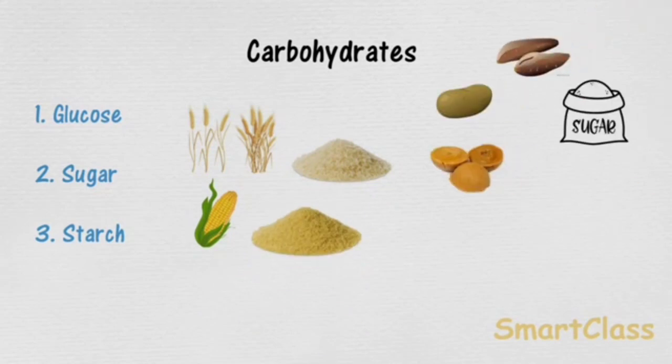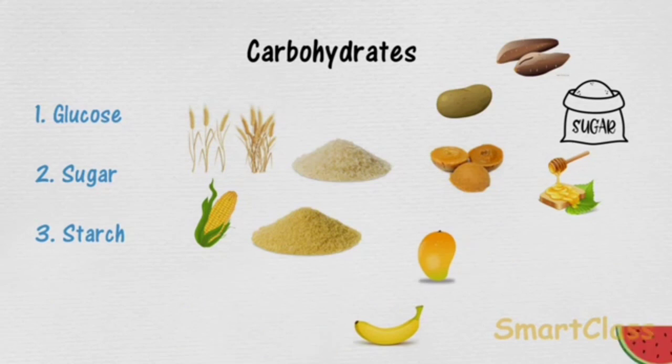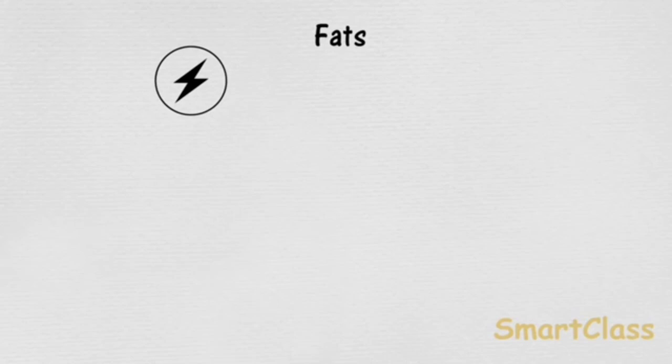Foods such as maize, wheat, jaggery, sugar, potato, and fruits are rich sources of carbohydrates.